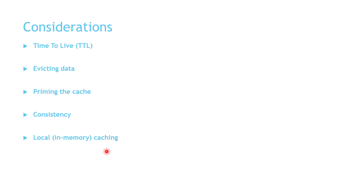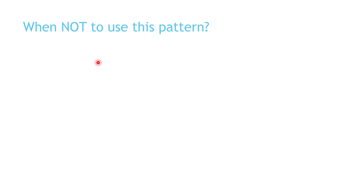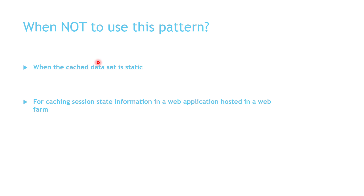Finally, consider the deployment style for your cache — whether a local cache, single-node cache instance, or multi-node cache cluster. You should use Cache-Aside Pattern if you don't have native read-through or write-through operations already implemented, or when resource demand is unpredictable and you can't load everything into the cache. You should not use this pattern when the cached data set is static, as static data is usually loaded at application start. Also, avoid caching session state information in a web application hosted in a web form — it's better to use the sticky session option in your load balancer to achieve that.